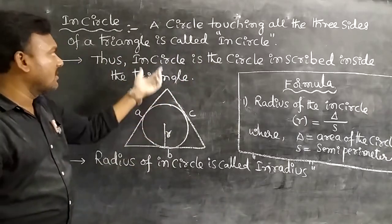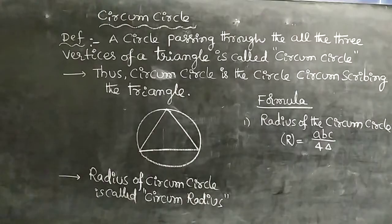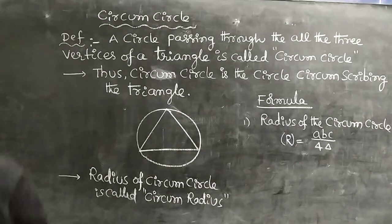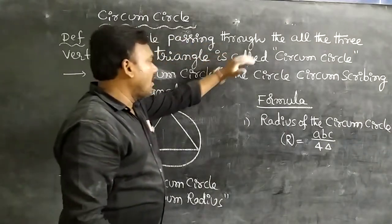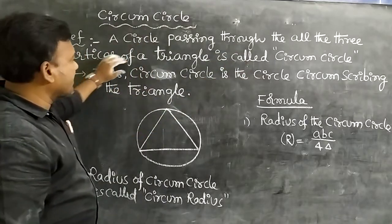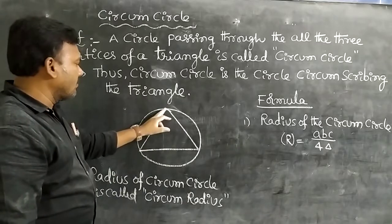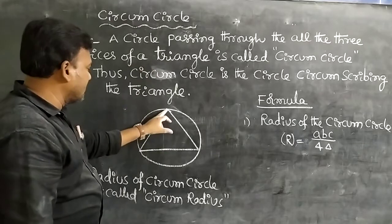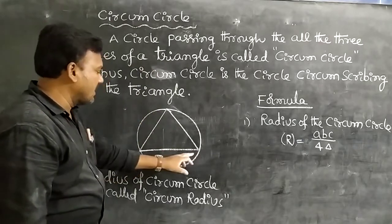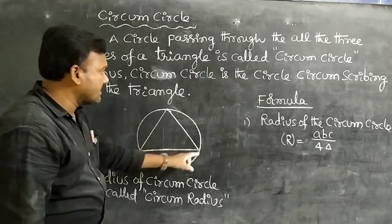All of you must enter this in your notebook. Now, the definition of circumcircle: a circle passing through all the vertices of a triangle is called a circumcircle. Vertex is singular, vertices is plural. A triangle has three vertices. A circle passing through all three vertices of a triangle is called a circumcircle.